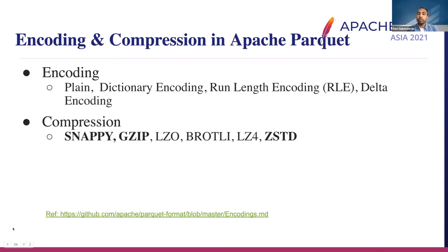Let's talk about how to reduce data size in Parquet. At Uber, Parquet dominates the file formats in our data lake — a small portion of files are in ORC, but the rest is all Parquet. The two main strategies are encoding and compression to make data size smaller. Parquet supports a variety of mechanisms such as run-length encoding, delta encoding, snappy compression, gzip, and z-standard.